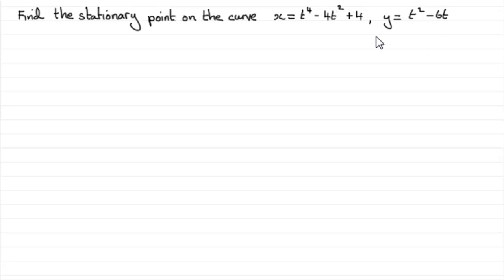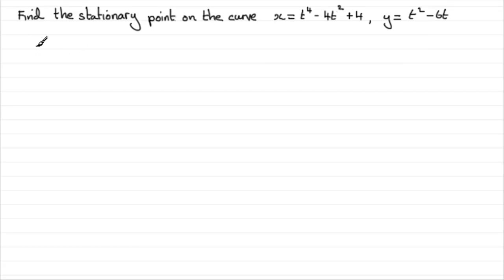How do we do questions like this? First of all we've got to find the gradient at any point on it — find dy by dx and make that gradient dy/dx equal to 0. So let's start by finding dy by dx.